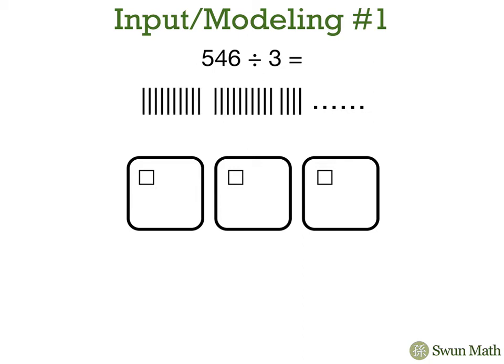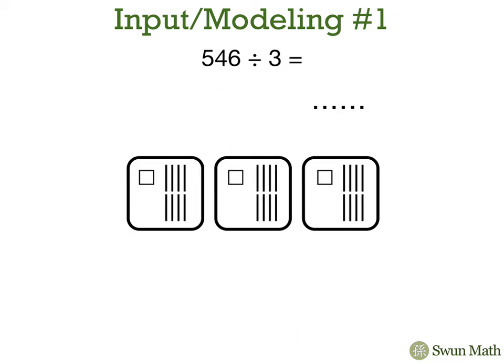Now we have 24 tens. If we divide those evenly into our three groups, we can put eight groups of ten in each of the three groups. And now we have six ones. We could put two ones into each of our groups.